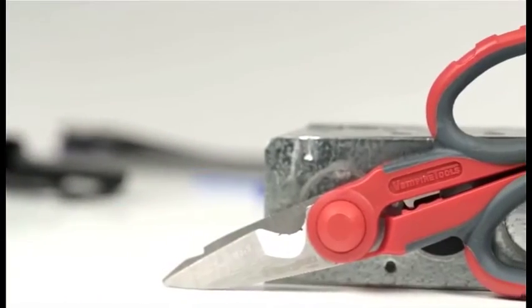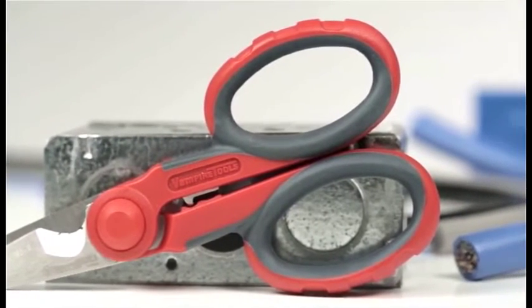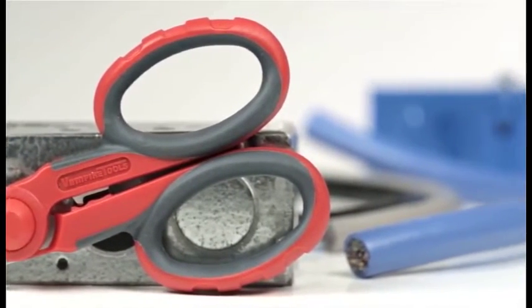It also has a crimping function in between the handles. The blades are made of high-carbon alloy steel infused with molybdenum and vanadium at the edges to achieve hardness to cut metal wire.